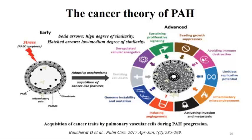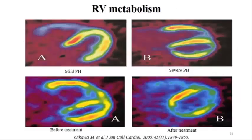PAH is like cancer—the endothelial and muscle cells have characteristics similar to cancer, and our treatment approach is now similar: multiple drugs, combination therapy upfront, targeting multiple pathways. Not only proliferation and resistance to apoptosis, but also metabolism. When you do a PET scan in a cancer patient they show the Warburg effect—increased glucose uptake and more glycolysis, which is why the PET scan lights up. The same happens in pulmonary hypertension. In severe PH, the right ventricle shifts to carbohydrate metabolism and glycolytic pathways, and that's why the PET scan lights up in the RV free wall.